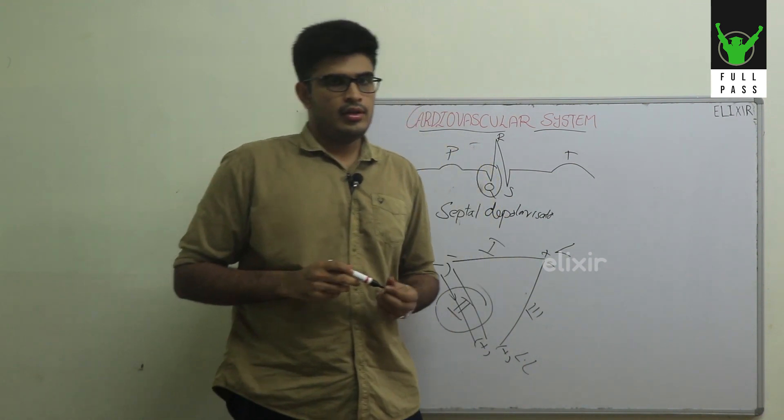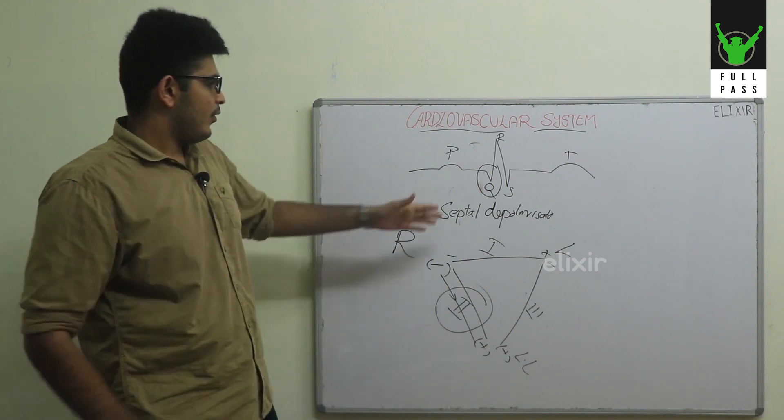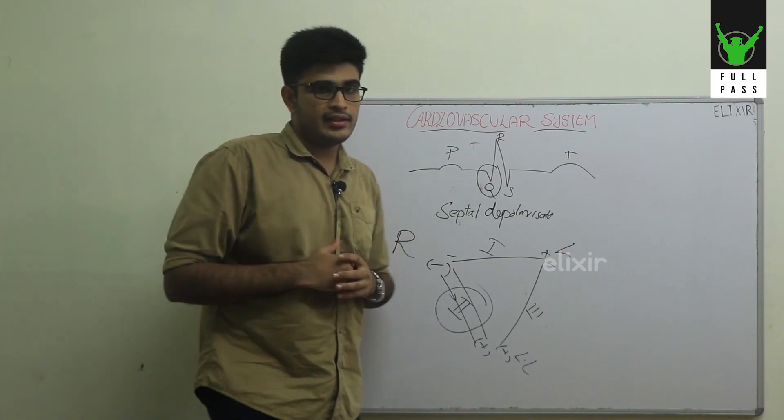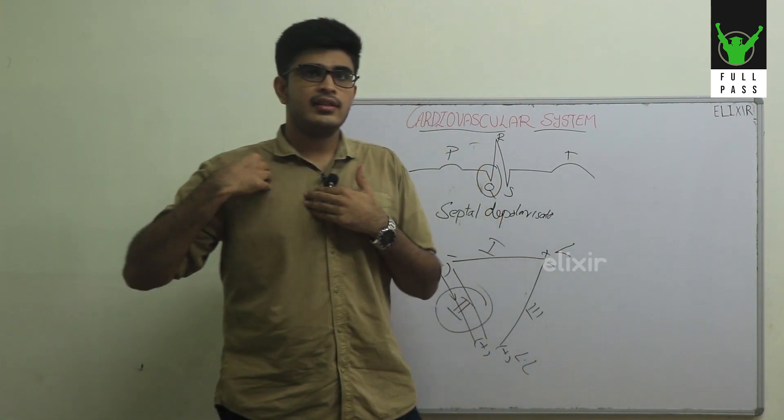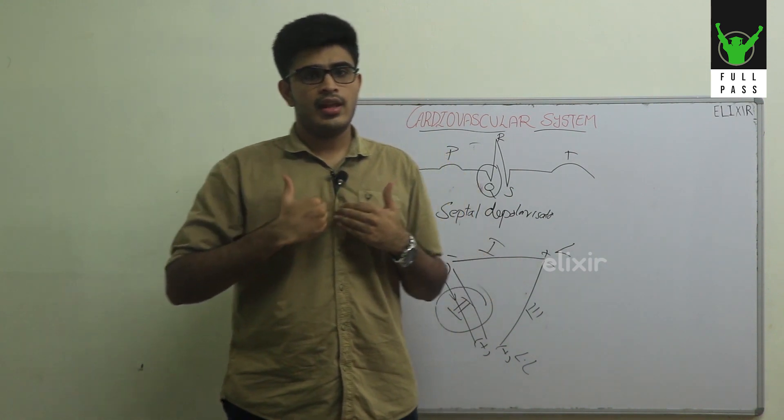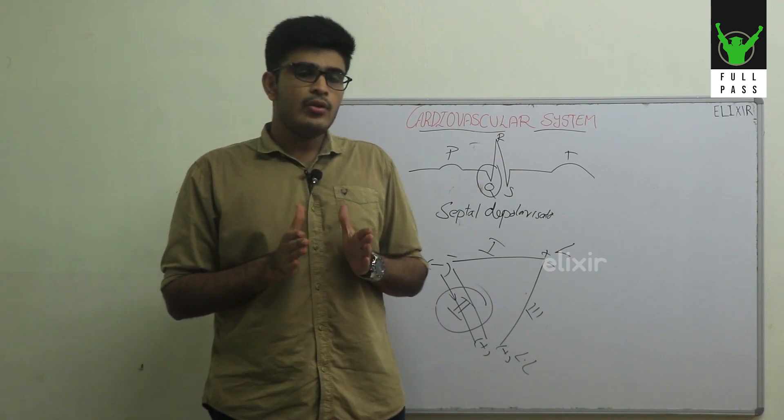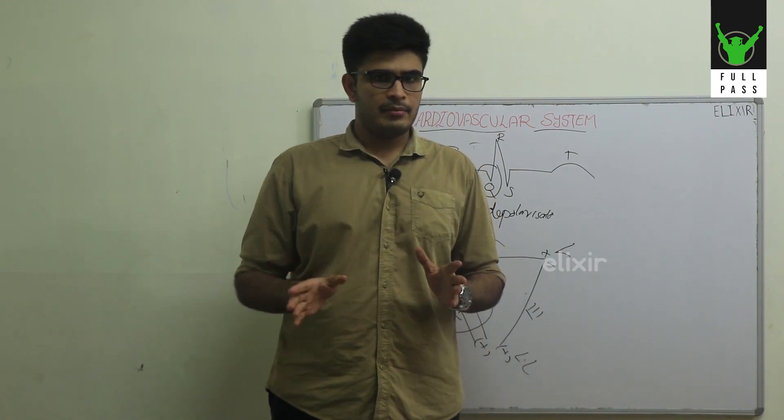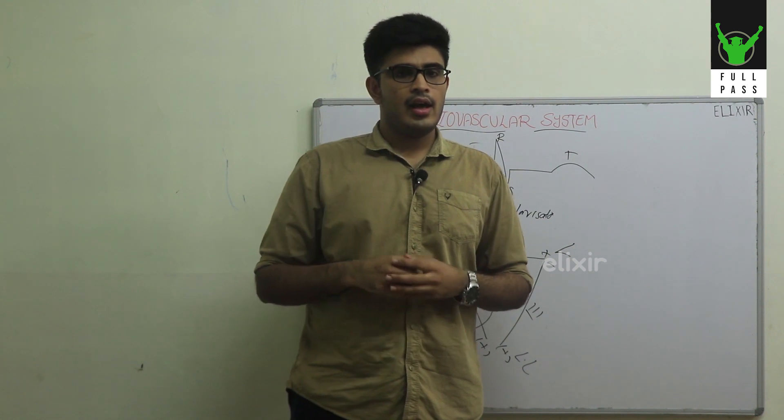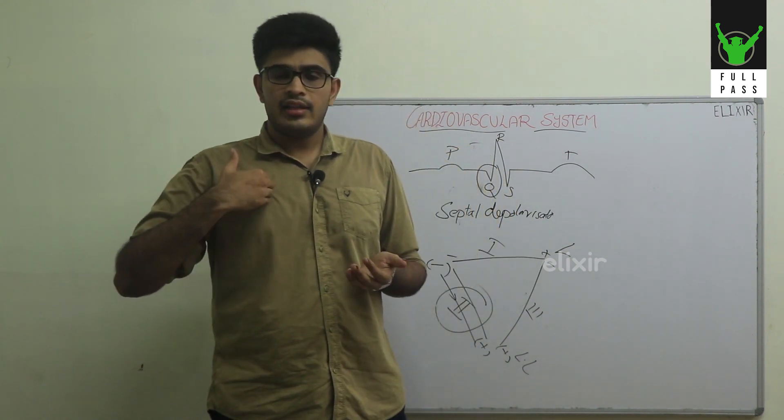Let's see why the Q wave is negative. The impulses travel from the SA node to the AV node, from the AV node to the septum. The AV node has two branches: the left branch and right branch. The left branch being shorter, the impulses reach much quicker to the left branch than to the right branch.